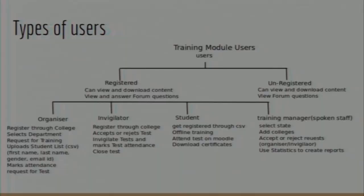That data gets added to our statistics, and we know which organizer or college has shown interest in using our material. The organizer then uploads a CSV file for students. The CSV attributes are first name, last name, email ID, and gender. We identify each student uniquely by their email ID, which serves as our primary key.